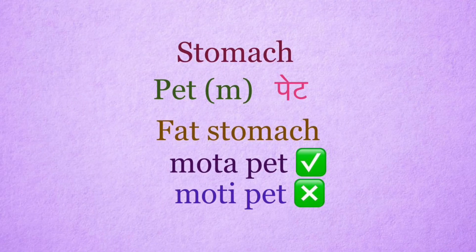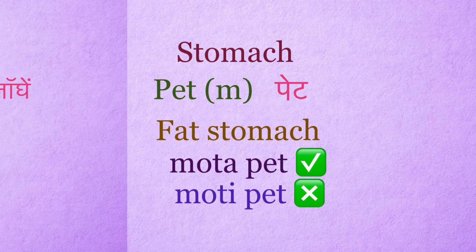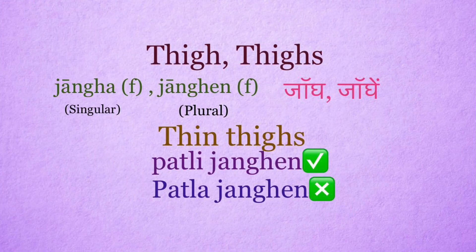Stomach: peet. It's a masculine word. Fat stomach: right use is mota peet. Wrong use: moti peet.